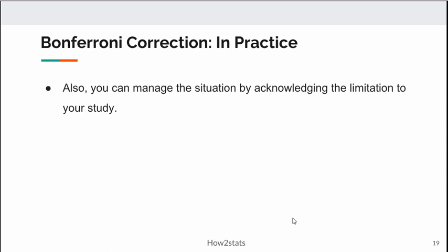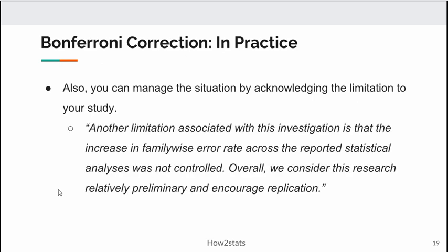Another option is to simply acknowledge in your discussion that you might not have strictly maintained family-wise error rate at 0.05. You could write something like: 'Another limitation of this investigation is that the increase in family-wise error rate across the reported statistical analyses was not controlled. Overall, we consider this research relatively preliminary and encourage replication.' That sort of statement will disarm, I suspect, 95% of reviewers who know about family-wise error rate. If you maintain a relatively small number of analyses and acknowledge this limitation, you'll probably get away without anyone objecting.